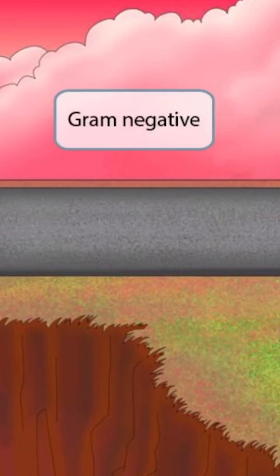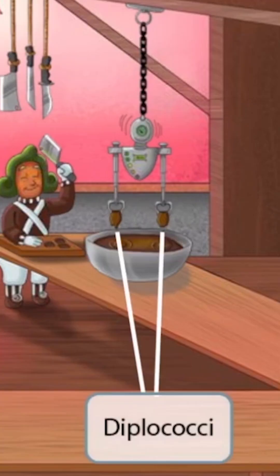Take note of the pink and red background. Just like how we used purples and blues in our gram-positive videos, we'll be using pinks and reds in our gram-negative videos. So Neisseria is a gram-negative organism.